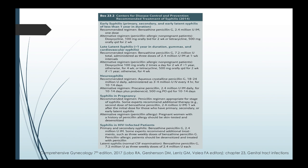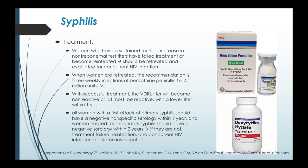This table summarizes the recommended treatment for syphilis by the CDC according to the stage of disease. Women who have a sustained fourfold increase in non-treponemal test titers have failed treatment or become reinfected; they should be retreated and evaluated for concurrent HIV infection. When retreated, the recommendation is three weekly injections of benzathine penicillin G 2.4 million units IM. With successful treatment, the VDRL titer will become non-reactive or reactive with a lower titer within one year. All women with a first attack of primary syphilis should have a negative non-specific serology within one year; those treated for secondary syphilis should have negative serology within two years; otherwise, treatment failure, reinfection, and concurrent HIV infection should be investigated.